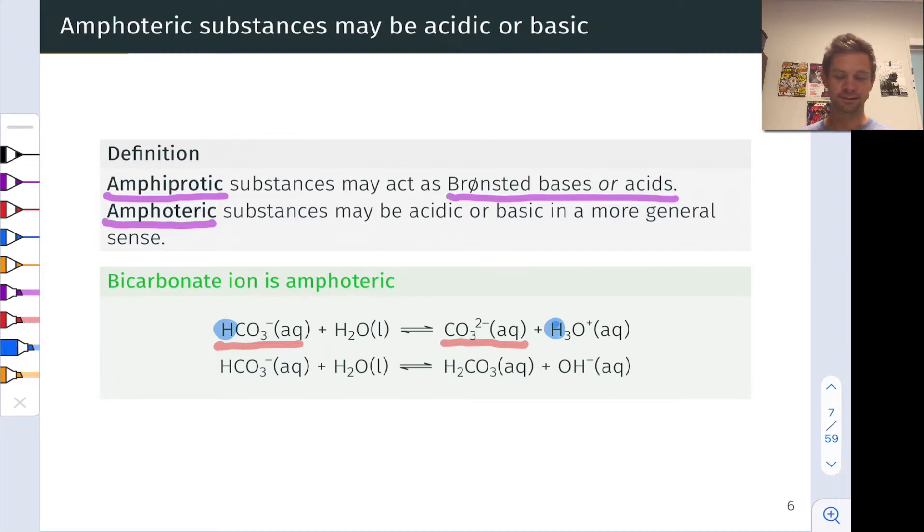In the bottom case now we're thinking about a proton in water being transferred to HCO3- to produce H2CO3. Notice that the HCO3- is acting not as an acid but as a base. What we're producing is the conjugate acid of HCO3- which is H2CO3. Bicarbonate can donate a proton, that's reaction number one, or accept a proton, that's reaction number two. It's amphoteric.